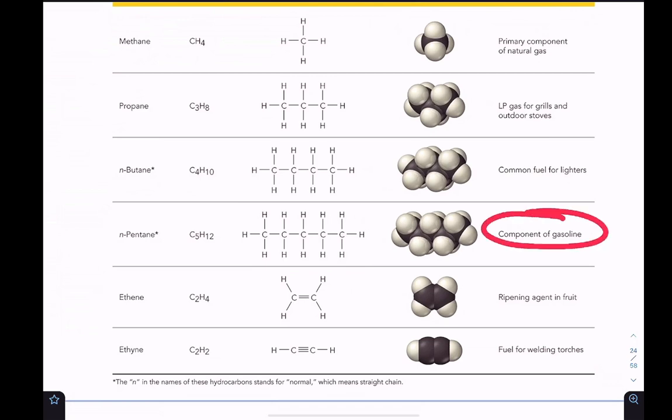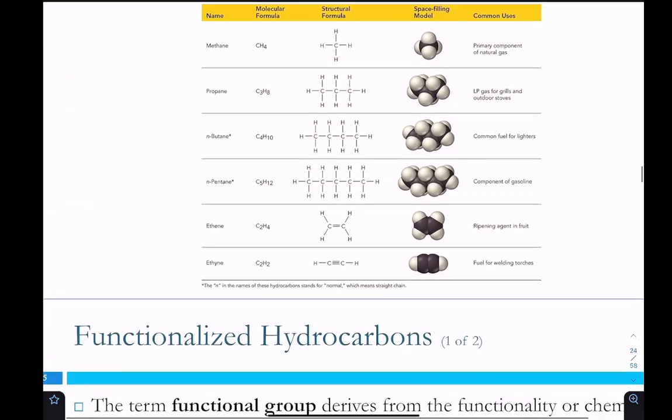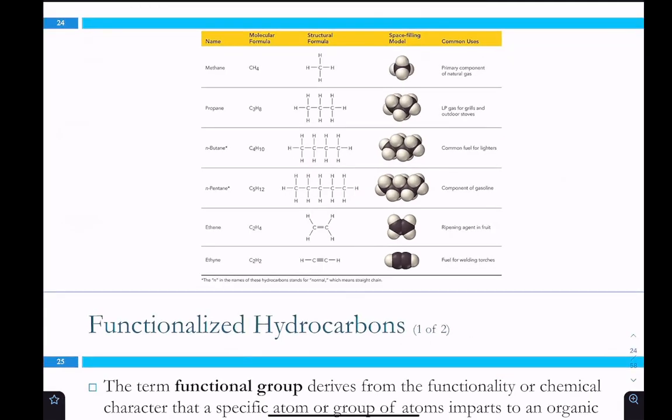Pentane is a major component of gasoline. Ethene is actually a ripening agent in fruit. So if you have something that's not ripe and you want it to get more ripe, if you put it in a bag with an apple, apples produce a lot of ethene, it'll help other fruit to ripen. If you don't want them to ripen then don't put them next to your apples because it'll ripen them faster. And then ethyne is a fuel for welding torches. I think it's also acetylene. So if you have like an acetylene oxygen torch, that's ethyne, just a common name.